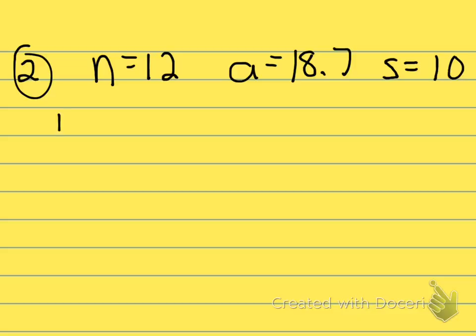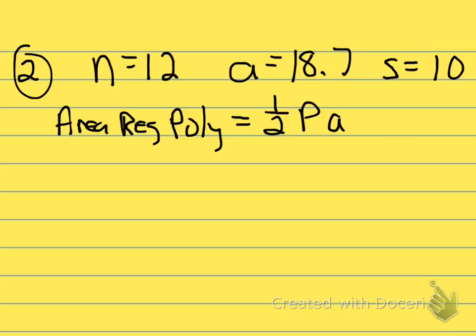The formula for area of a regular polygon, and this is on your formula sheet, just like the triangle one was on the last problem, is one half the perimeter of that polygon times its apothem. Well, we've already got its apothem. The apothem right above there is 18.7. All we need is the perimeter.